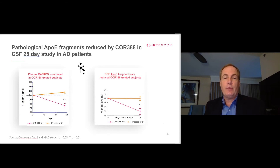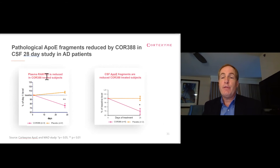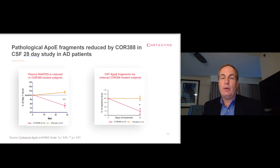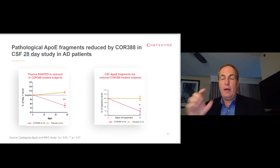Looking at the efficacy and biomarker data from our Phase 1 study: on the left is RANTES, also called CCL5, which is an inflammatory biomarker. We expected that treatment with atuzaginstat would reduce this, and we saw about a 30% reduction in only 28 days — statistically significant. We also know that gingipains from P. gingivalis cleave important proteins like tau and ApoE, which is known to be involved in Alzheimer's. We predicted that treatment with COR388 would reduce the small ApoE fragments, and again we saw about a 30% reduction — again statistically significant.